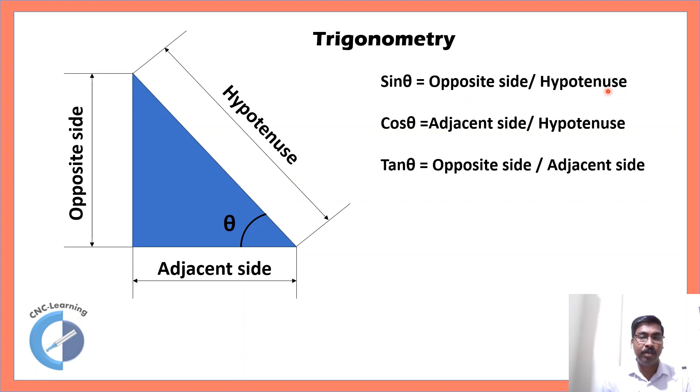So, if you have any of this and the angle, then you have to use sin theta. If you have any of this and you want to calculate the other one, then you have to use cos theta. If you want to calculate any one from this, then you need to calculate using tan theta.